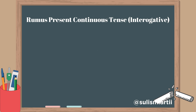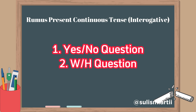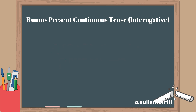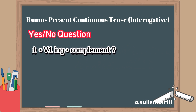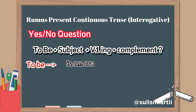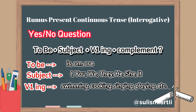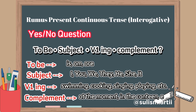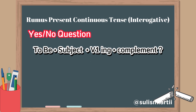The last one is the present continuous tense in the interrogative form. In this form, the formula is different from the previous ones. The interrogative form is divided into two: yes-no questions and WH-questions. But in this video, I will only discuss the yes-no question. The formula is: to be + subject + verb-ing + complement + question mark. For example: 'Are you going to school?'